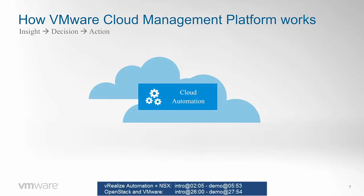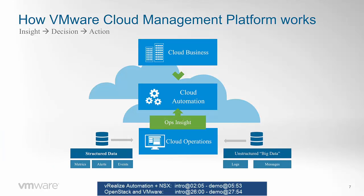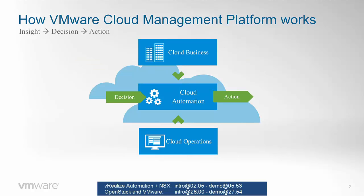vRealize Automation is the engine of the VMware Cloud Management Suite — the portal where users consume items from the service catalog, where admins define and publish application templates, and where governance and enterprise-grade cloud management are handled. It retrieves information from other suite components for full visibility. The suite analyzes both structured and unstructured data so users and admins are always informed about resource health, and it provides cost information about deployed services, allowing comparison against other private or public cloud environments so resources can be deployed in the most cost-effective place.